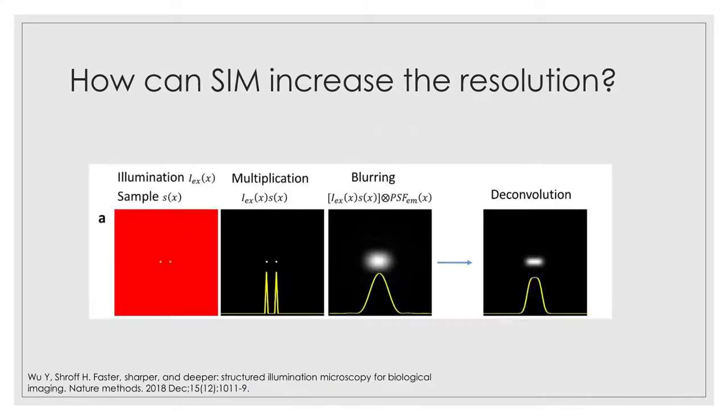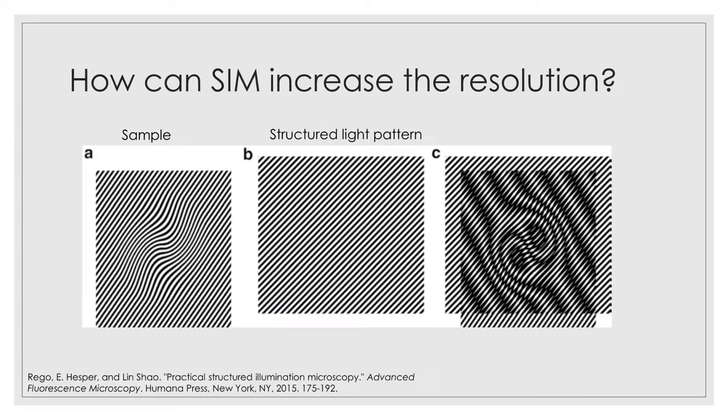In wide-field illumination, if you imagine this red square is the red light that's illuminating these two dots, then what should theoretically be seen is just two points. However, what's actually seen is a blurred spot because it's blurred due to the point spread function. In structured illumination microscopy, the resolution can be increased through the phenomenon of moiré fringes. And these occur when two different patterns are superimposed on each other. So in this situation,